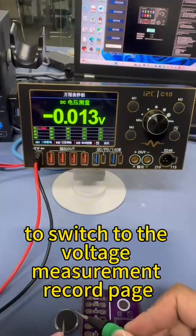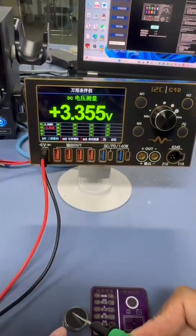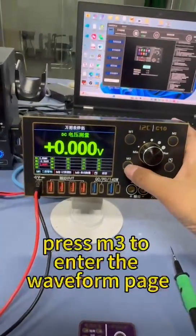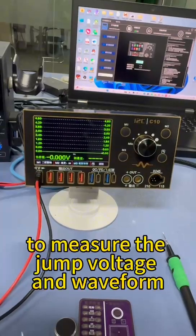Press M1 to switch to the voltage measurement record page. Press M3 to enter the waveform page to measure the jump voltage and waveform.